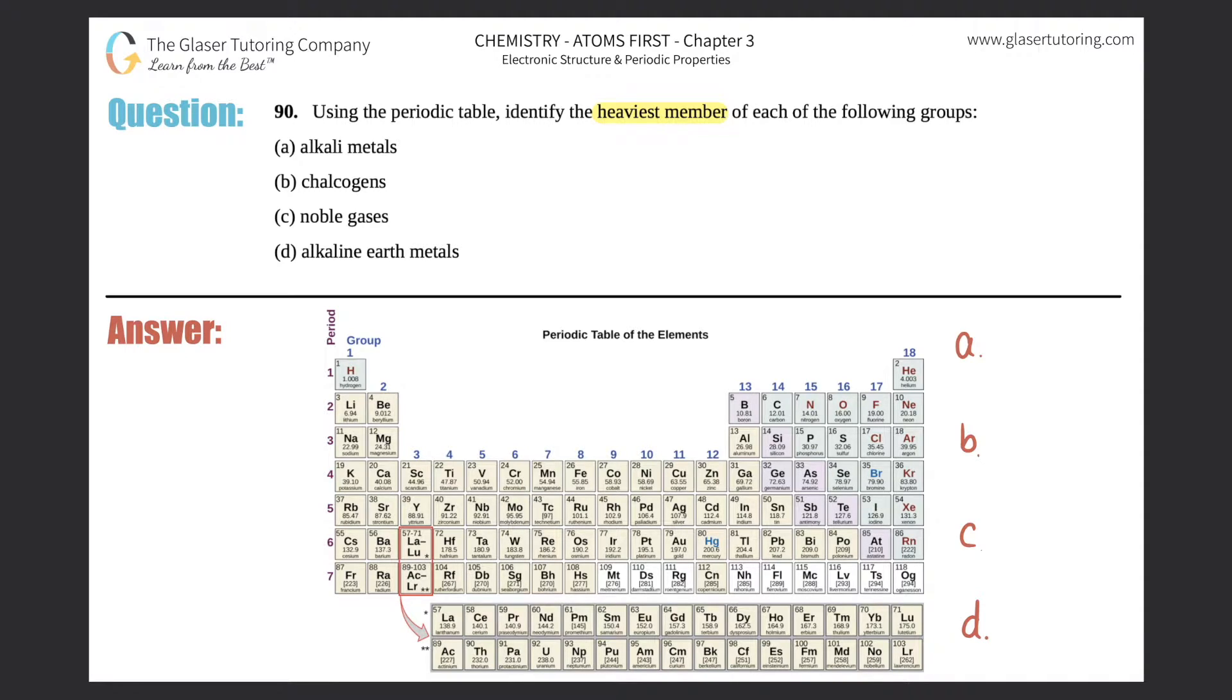Two things we need to know: understand what they mean by identifying the heaviest member, and know where these groups are on the periodic table. If you're the heaviest element in a group, you will have the largest mass.